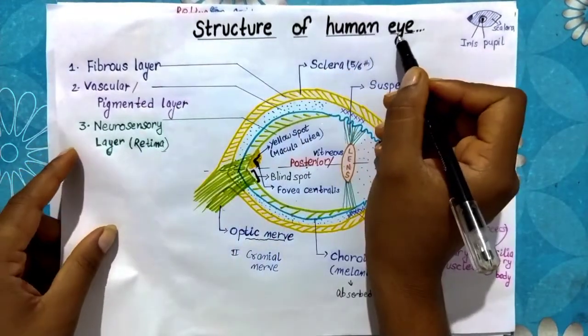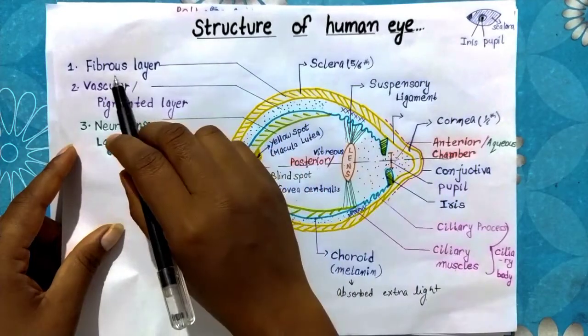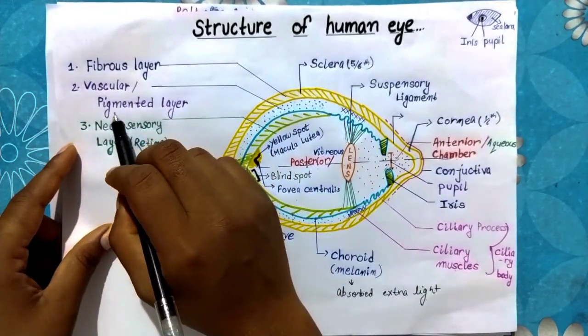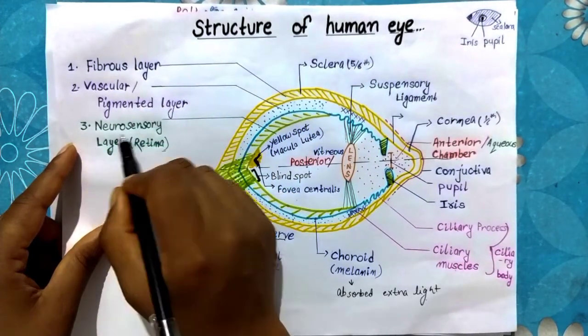The neurosensory layer - as we have seen in the structure of the human eye, the human eye is protected by three layers. The first layer is the fibrous layer.